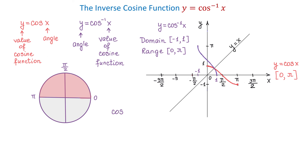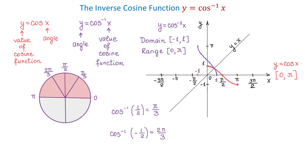Each time we evaluate the inverse cosine function we get an angle on the interval from 0 to pi. For example, if we evaluate inverse cosine of 1 over 2, the result is pi over 3, which is an angle on the interval from 0 to pi. You can try more examples using your calculator — just make sure that the number you use in parentheses is on the interval from negative 1 to positive 1.